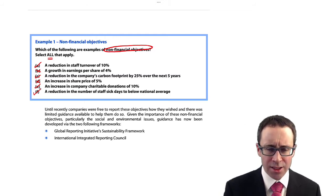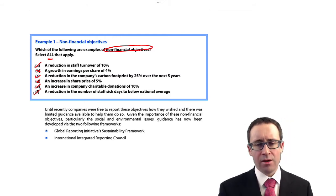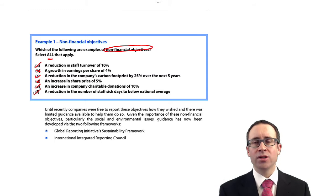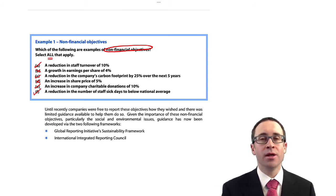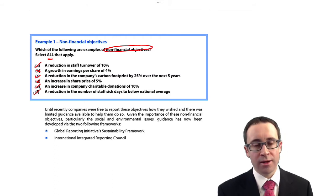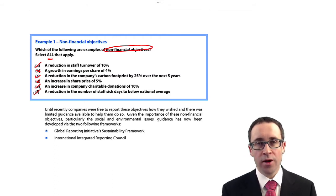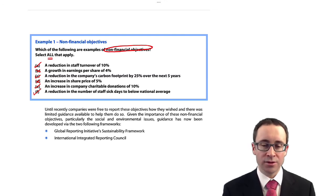So A, C, E, and F are all non-financial objectives. You'll find a couple of similar examples in the revision kits of your chosen provider, so make sure you work through those and build up a knowledge of all the different types of financial and non-financial objectives.